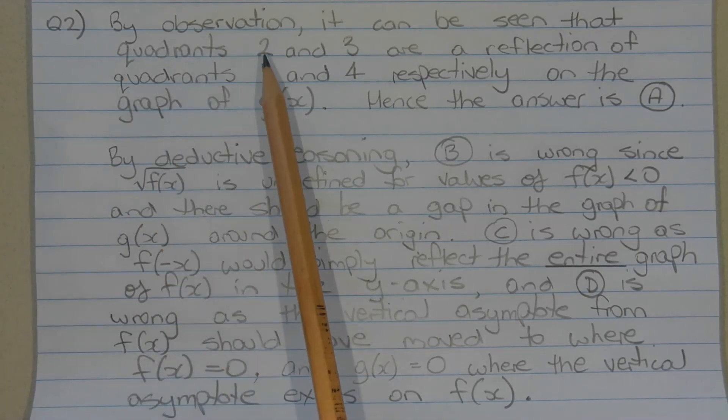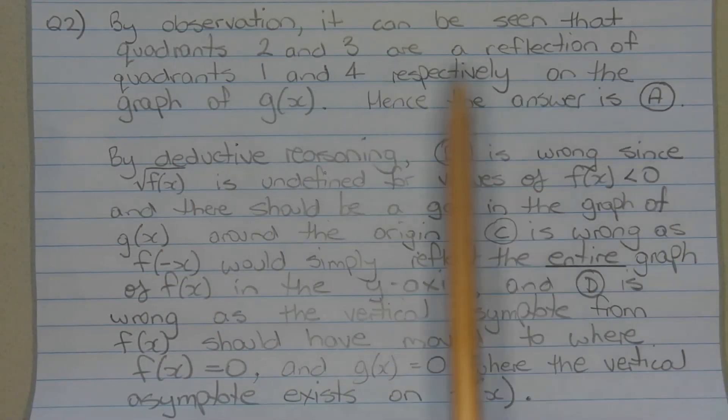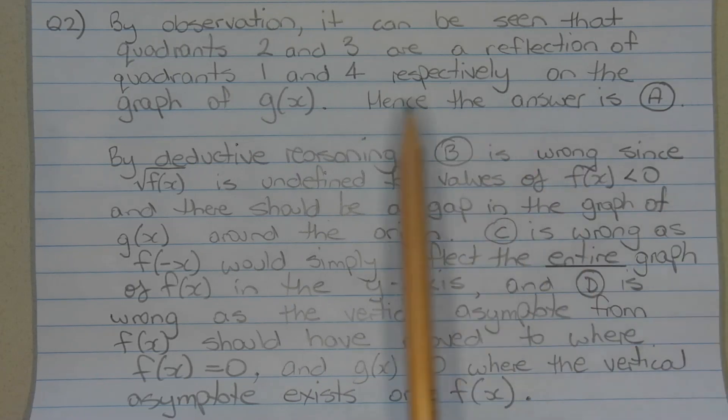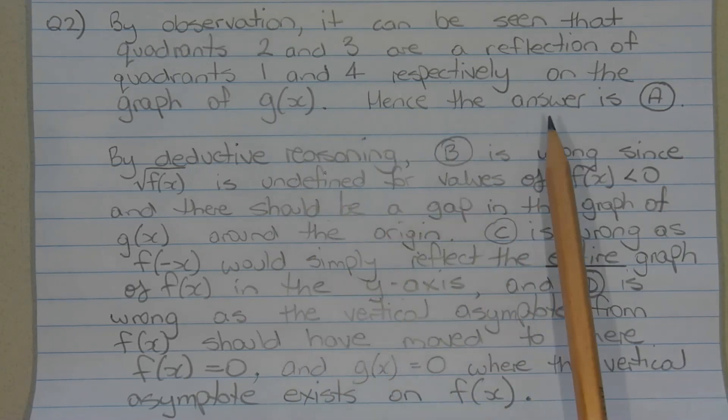By observation, it can be seen that quadrants 2 and 3 are a reflection of quadrants 1 and 4 respectively on the graph of g(x). Hence, the answer is option A.